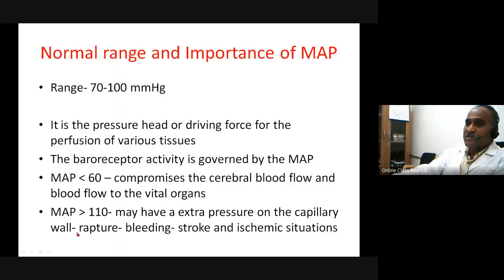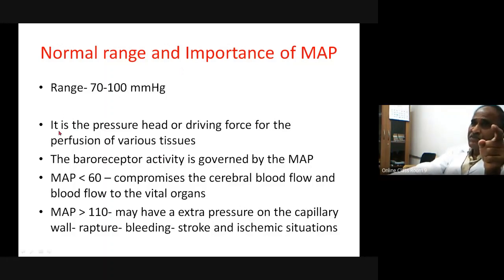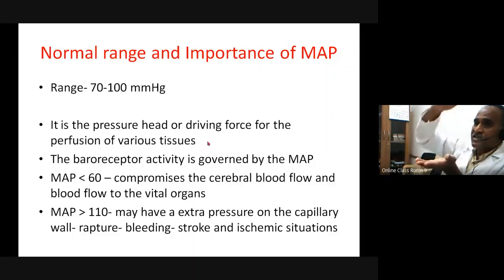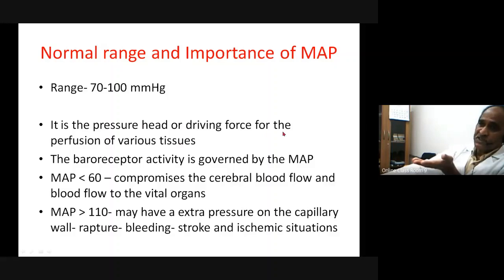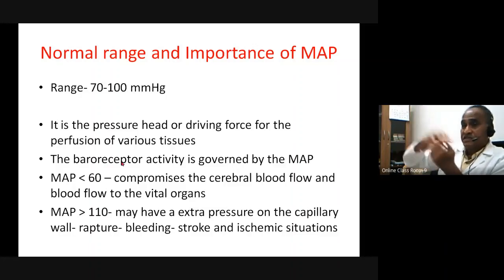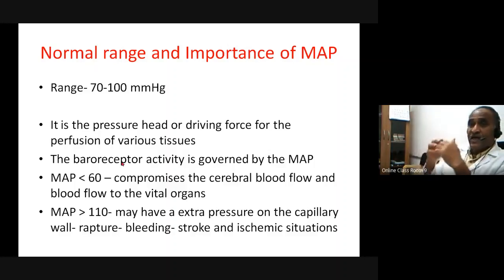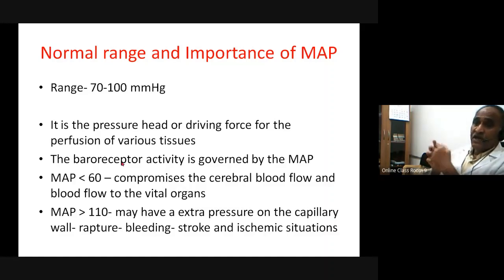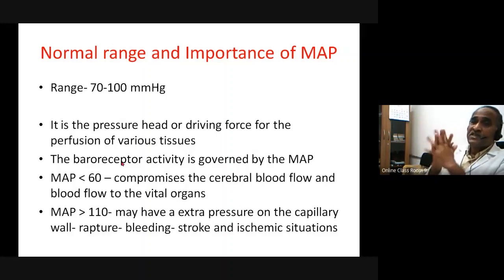MAP is the pressure head or driving force for perfusion of various tissues — it perfuses all organs in the body. Baroreceptors are adjusted according to MAP: when MAP increases, baroreceptor activity increases; when MAP decreases, baroreceptor activity decreases. At a MAP below 60 mmHg, baroreceptor activity almost ceases, and something else takes over. So MAP determines the baroreceptor discharge.